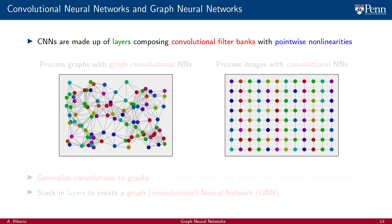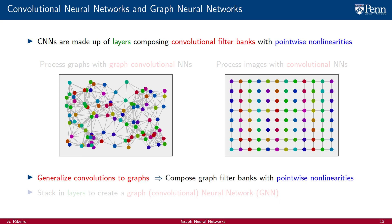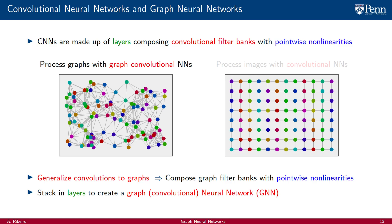It is the notion of a convolutional filter bank that we do not know how to generalize to graphs. Out of these observations, we find our roadmap. If we generalize convolutions to graphs, we can easily create graph filter banks, which we can easily combine with pointwise nonlinearities, and which we can easily stack in layers to create a graph neural network. This GNN is the architecture that we will use to process graphs and graph signals, which we hope will be as successful and scalable as CNNs are for processing of images and time signals.